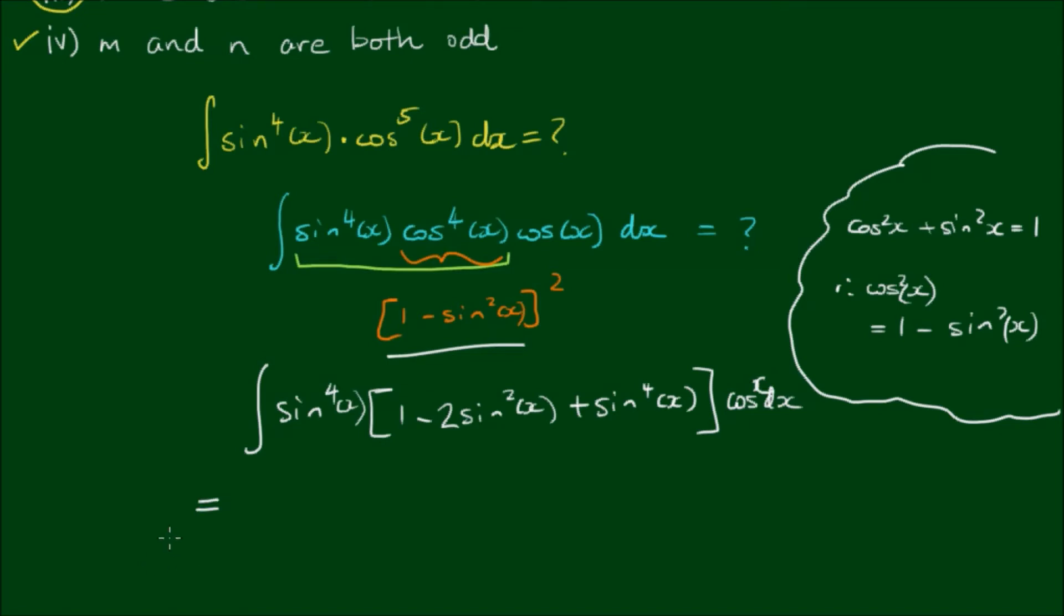What we can do now is to make a substitution. So we can let u equal the sine of x. And then the derivative du on dx is equal to cosine of x. And we can write this in differential form as du equals cosine of x by dx.